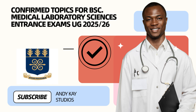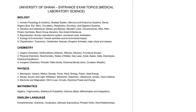So let's start with the topics you should prepare for. Starting with biology: under human physiology and anatomy, you are supposed to look at skeletal, nervous, and endocrine systems, sense organs — that's the ear, eye, and skin — and mechanisms of sight, hearing, and touch. Also the circulatory system, that is heart structure, blood circulation, composition of blood, blood groups and clotting.